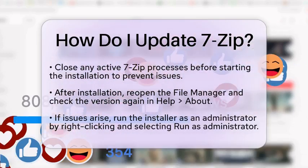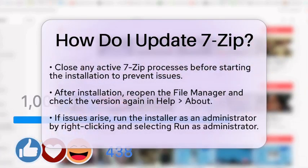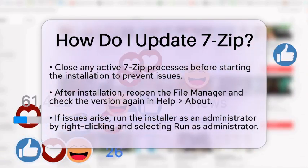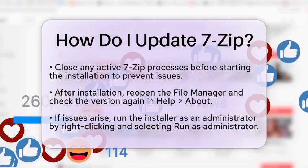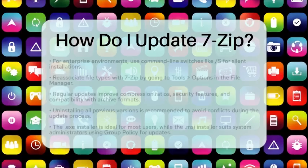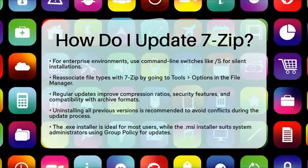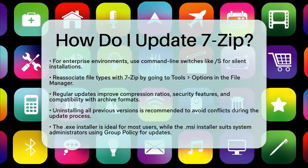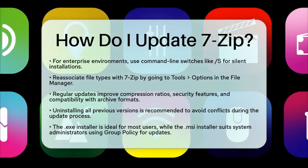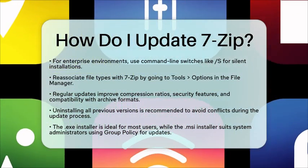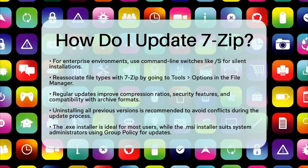After updating, you may want to reassociate file types with 7-Zip. You can do this by going to Tools and then Options in the File Manager. Updating 7-Zip is important because newer versions often come with improvements in compression ratios, security features, and compatibility with modern archive formats. Regular updates help ensure that you have the best performance for tasks like extracting large files or creating encrypted backups.